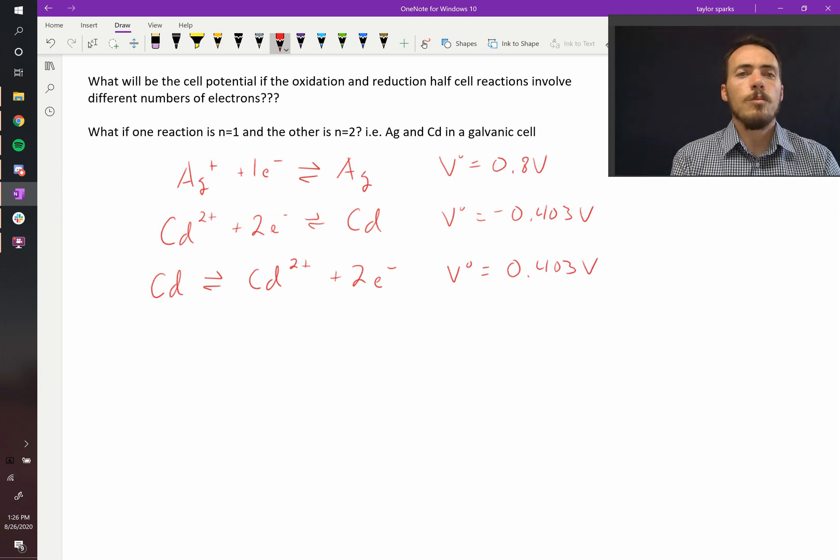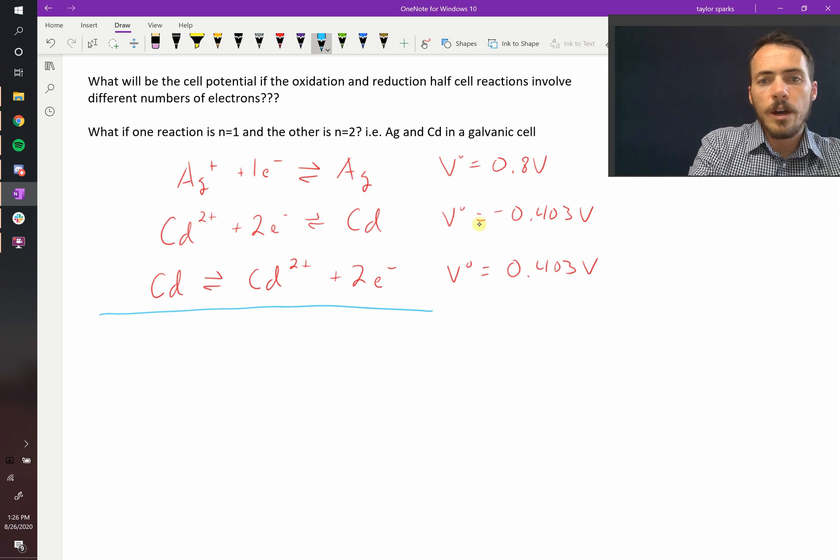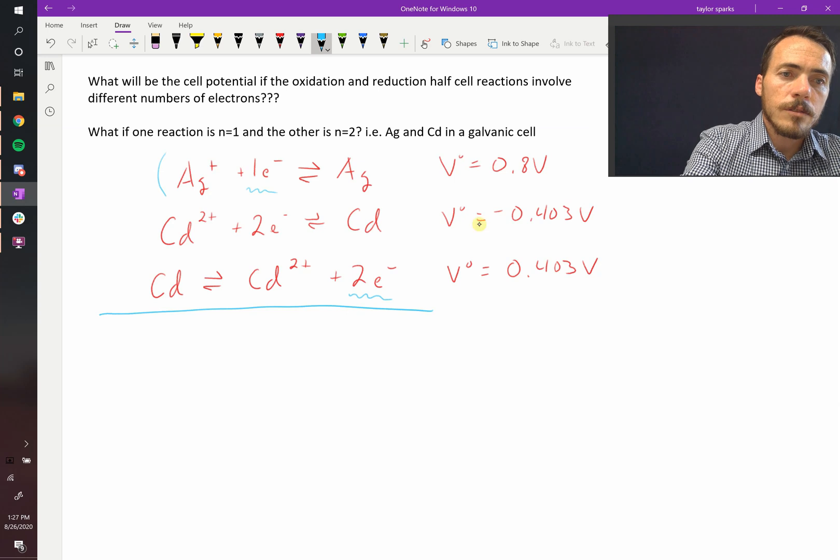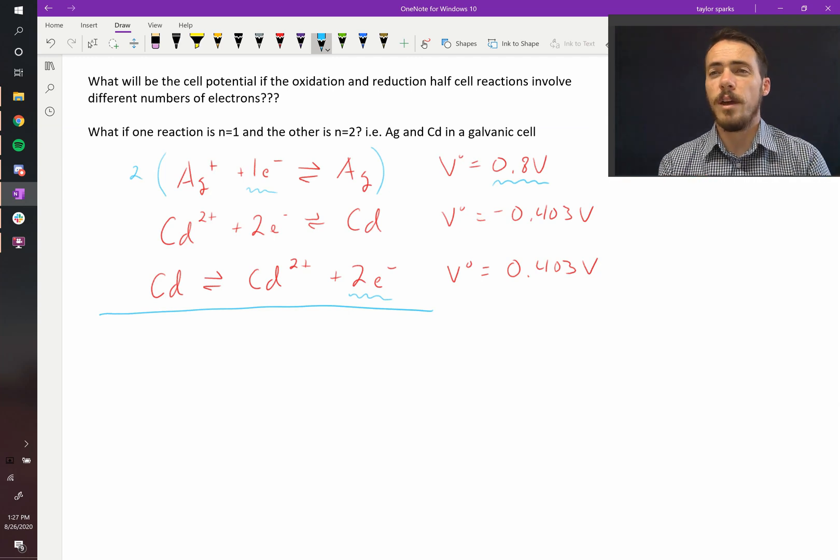Now the problem is, what if we tried to combine these together right now? If we combined it, we'd have two electrons right here, but we only have one electron. So the electrons wouldn't cancel out and these have to cancel out in these reactions. So what do we need to do? We need to multiply this. This gets multiplied by two. We do not multiply this by two. You do not do that. I know that we did that in free energy calculations. You do not do that in electrochemistry. That's one of the big differences here.